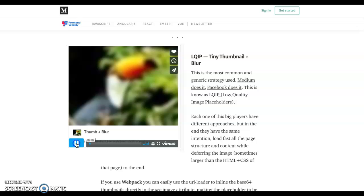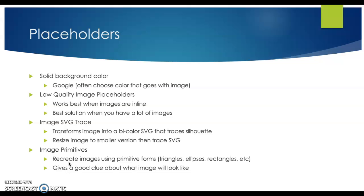These last two types of placeholders I'm going to go over a little bit faster. There's an image SVG trace — basically you take your image and transform it into a two-color SVG. That's what loads as your placeholder until your original image loads. And there's also one called an image primitive, which is my personal favorite. It's really cool but can be a bit complicated. You actually use your code to form these primitive images using triangles, ellipses, or rectangles — basically primitive shapes — and it gives a really good idea of what the image is going to look like.